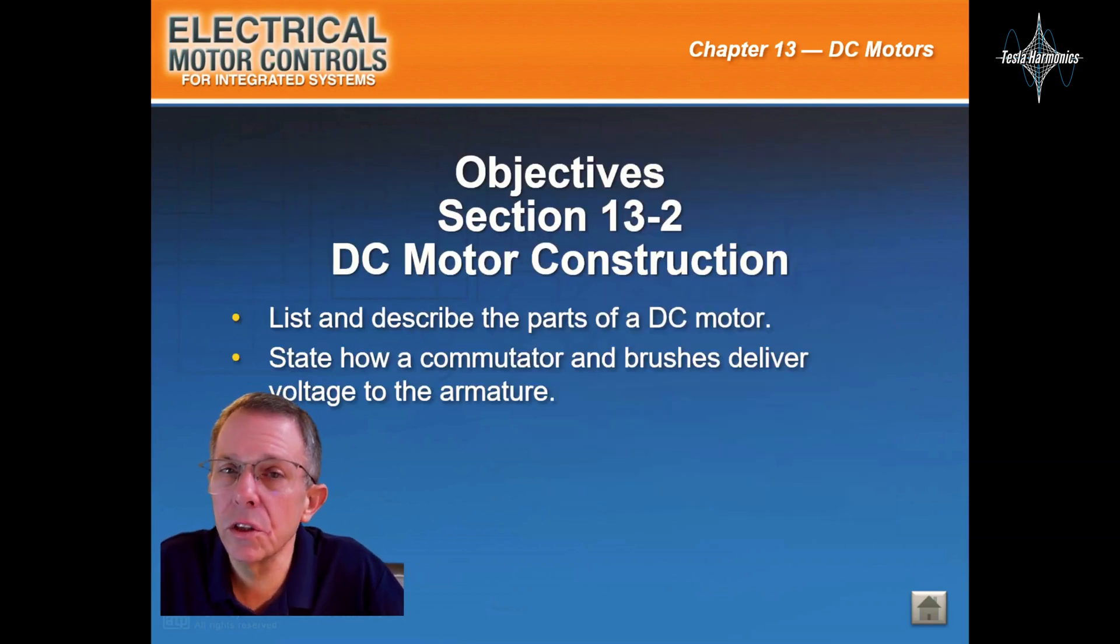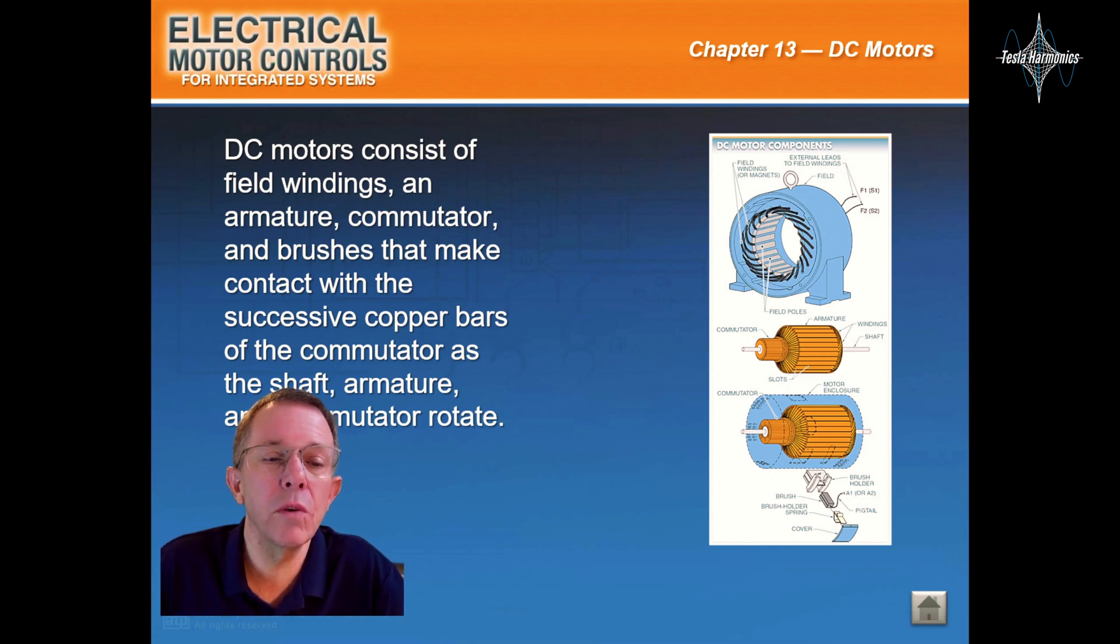DC motor construction: DC motors consist of a field winding, an armature, commutator, and brushes that make contact with the successive copper bars of the commutator as the shaft, armature, and commutator rotate.